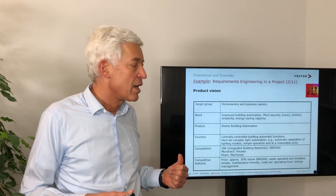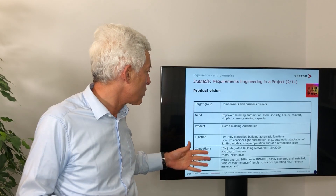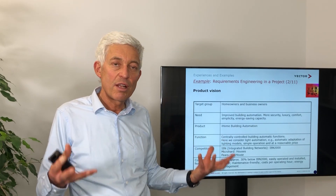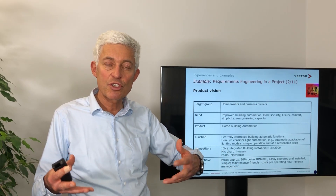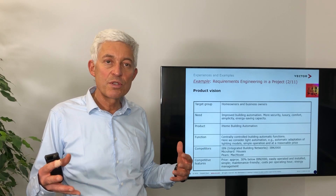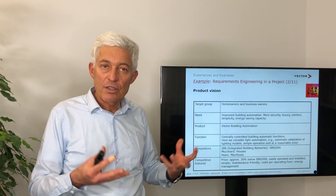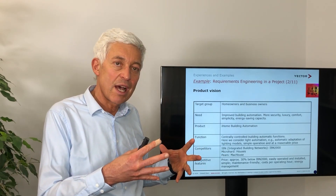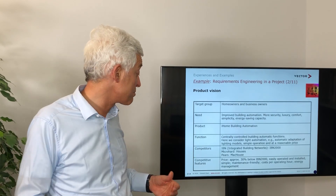The product vision is this home automation system which addresses home owners or small business owners who want to have improved building automation with all kinds of automation support with IoT — such as burglar alarms, automatic controls of energy consumption and energy supply, and amongst others also the lighting, meaning what kind of light scenarios we want to use, for instance during work hours, in the evenings, etc. The product we specify here is called iHome, a home automation building automation system, and we focus on the lighting part — not the whole specification, which can easily have hundreds or even thousands of requirements in practice.